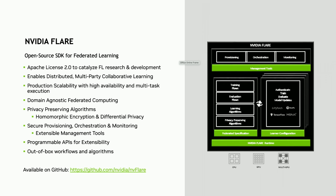For differential privacy, we support different types of filters out of the box: SVT, Gaussian noise, and others. If you need to implement your own, you just add your Python code and change the configuration — just one line — and your system will automatically include that DP filter. It's guaranteed that when the client sends out the model to the server, it will go through that filter. So you don't need to implement everything yourself.